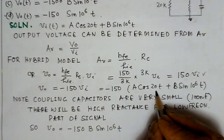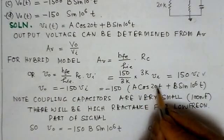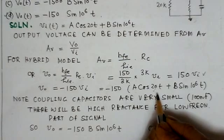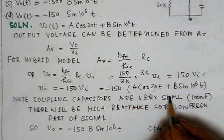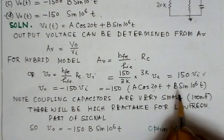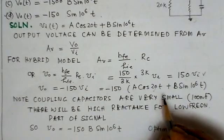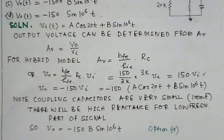The value would be very high. So the low frequency component, like the 2t term being the low frequency component, this component will not appear at the output because of the very high reactance introduced by the coupling capacitors. This part will not be coupled.